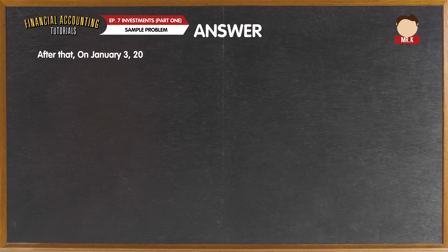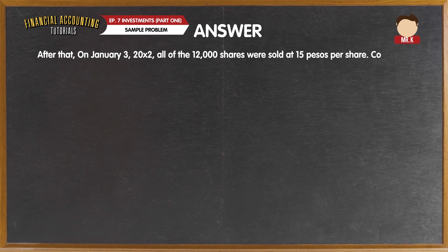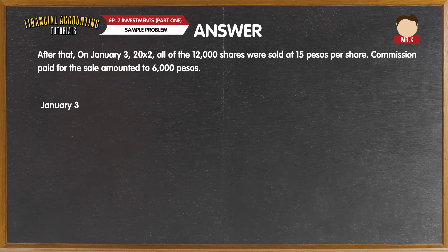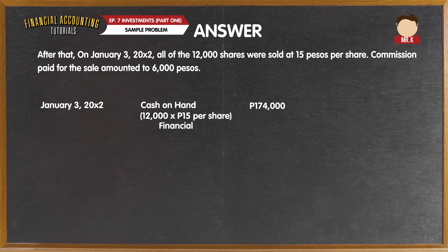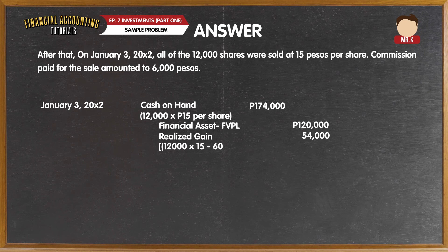On January 3, 20X2, all 12,000 shares were sold at 15 pesos per share. Commission paid for the sale amounted to 6,000 pesos. The sale entry is: debit cash — 174,000 pesos, computed as 12,000 shares multiplied by 15 pesos; credit financial assets designated at fair value through profit or loss — 120,000 pesos; and credit realized gain on sale — 54,000 pesos. The realized gain is computed as sale proceeds of 180,000 pesos minus commission paid of 6,000 pesos, minus the carrying amount of the investment at December 31, 20X1 of 120,000 pesos, giving a total of 54,000 pesos.